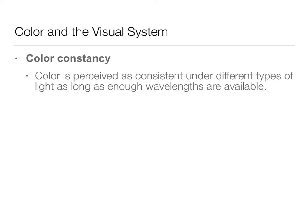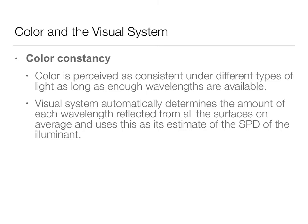So as long as there's enough light to see it, we're going to perceive that color as the same regardless of if it's a dim room, a light room, if it's shaded — any of those things, we're going to perceive it as the same. The visual system automatically determines the amount of each wavelength reflected from the surfaces and uses this to estimate the illuminant.